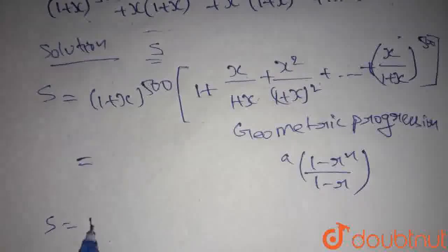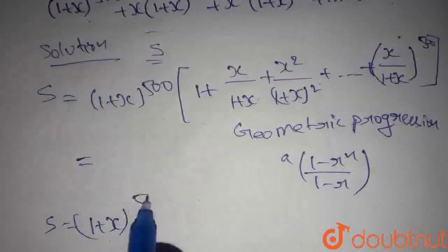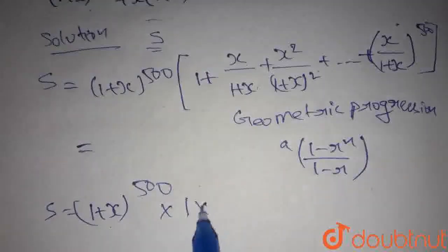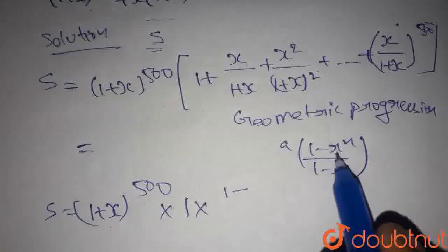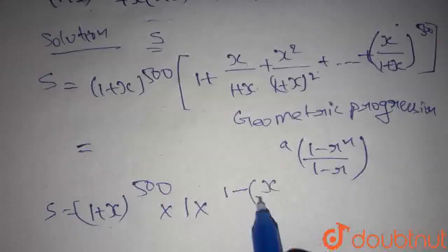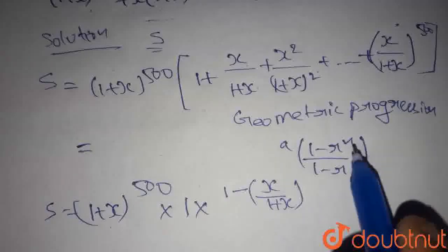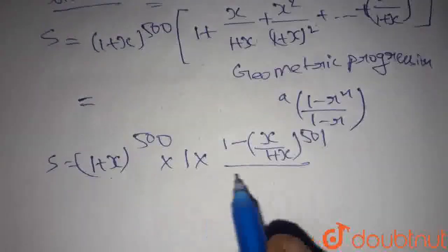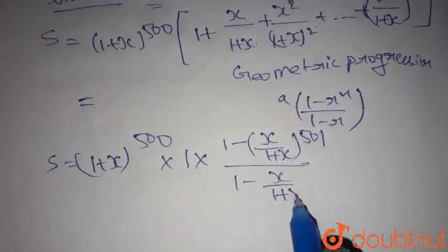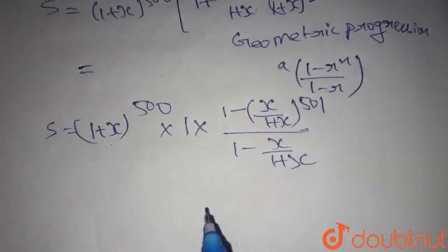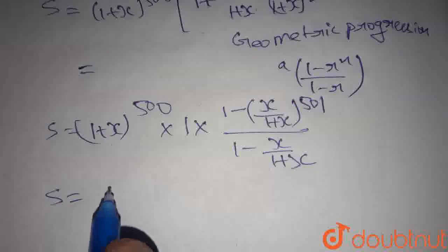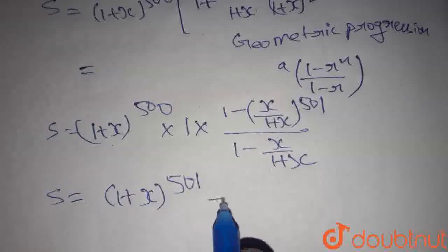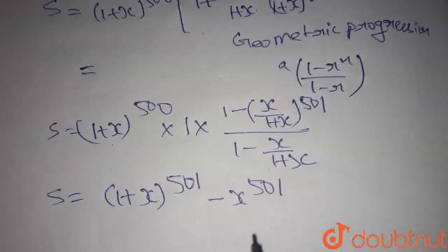Similarly, here we get s equal to (1 + x) whole power 500, into the first term 1, into (1 minus r), where r is x by (1 + x), and n is 501 — since there are 501 terms — divided by (1 minus x by (1 + x)). By solving this, we get s equal to (1 + x) whole power 501 minus x power 501.